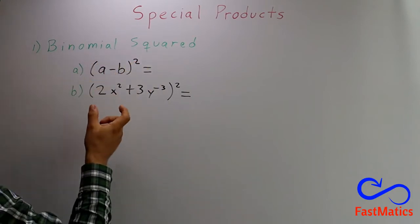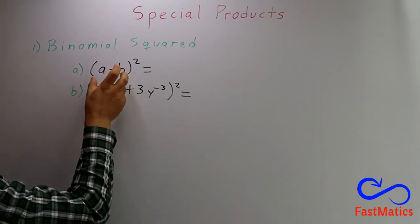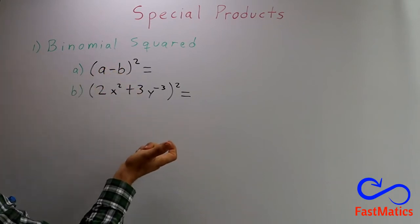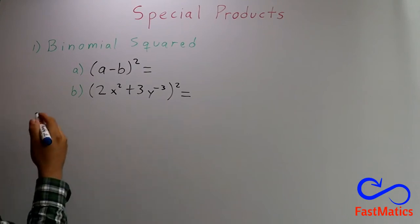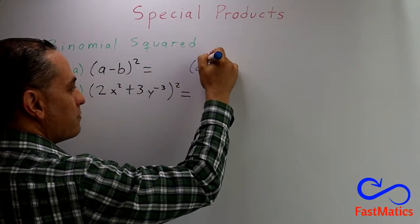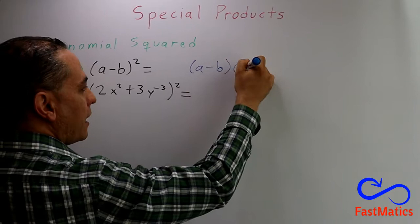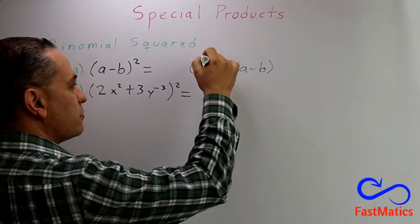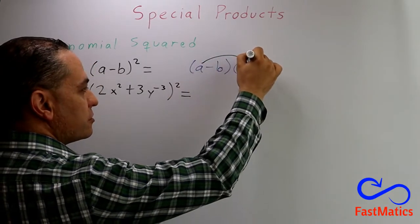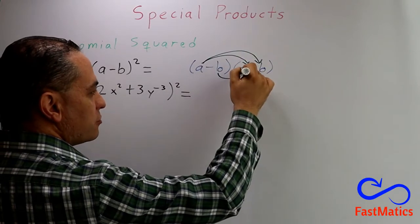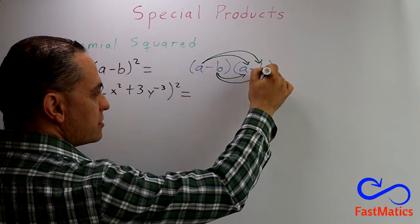That means you are going to multiply the same two terms by the same two terms. But remember that when you multiply the same by the same, you have to multiply the first term by the first term, the first by the second, the second by the first, and the second by the second.